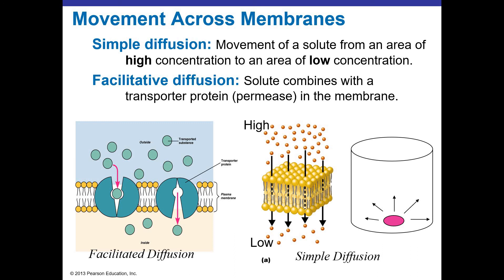If you think of simple diffusion and just add a membrane, molecules still cross the membrane by going down their concentration gradient from high to low. Things that are small and uncharged may be able to simply diffuse across that membrane.